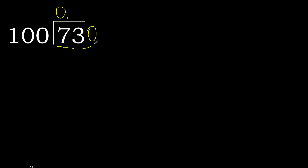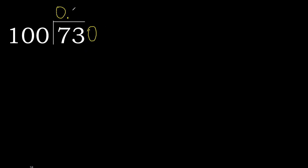730 is not less, therefore work with 730. 100 multiplied by which number is nearest to 730 but not greater? 100 multiplied by 8 is 800, which is greater. Multiplied by 7: 700 is not greater. Subtract — remainder is 30.